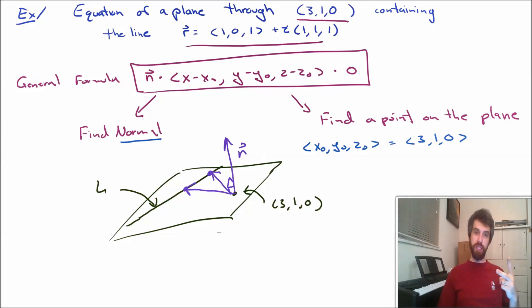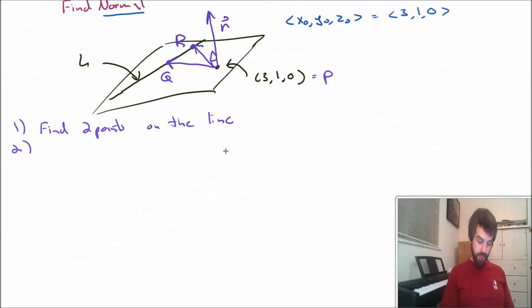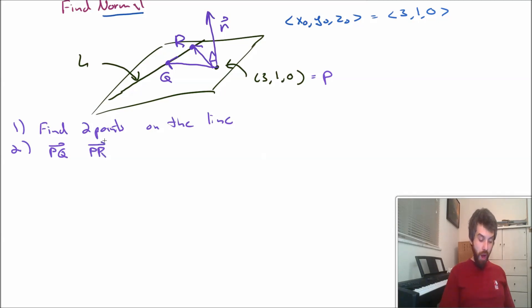Here's going to be my strategy for solving this puzzle. I'm going to try to find two points that are going to be on the line. If I call my 3, 1, 0 the point P, then I'm going to call my other two points, the point Q and the point R. My next step is going to be to figure out the vector PQ, to figure out the vector PR.